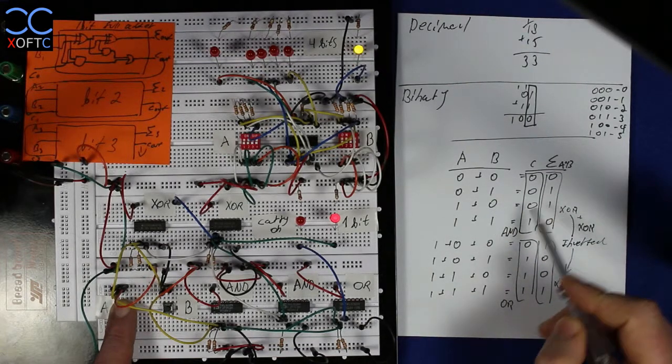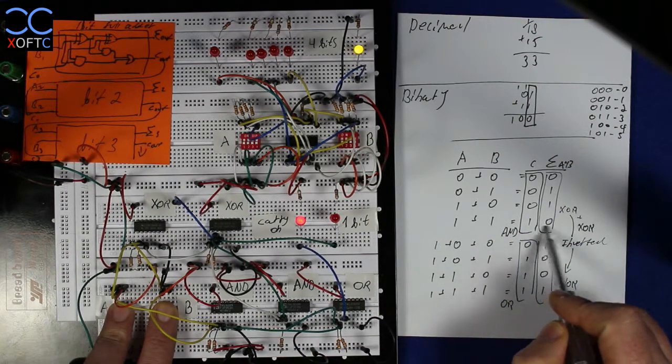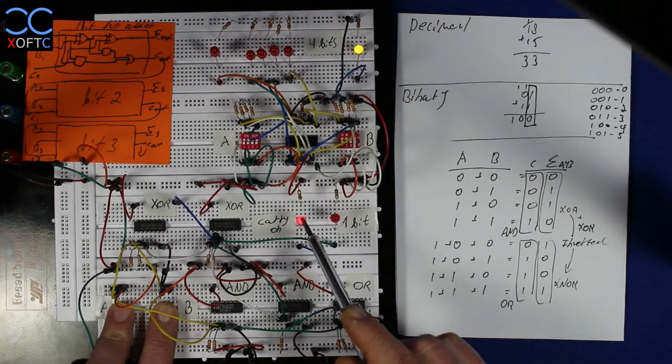Again, we get a 1. And if A is 1 and B is 1, 1 plus 1 is 2. We get a 0 on the sum and 1 on the carry-on.